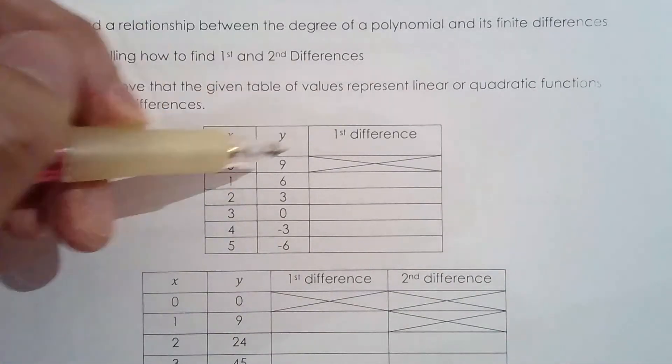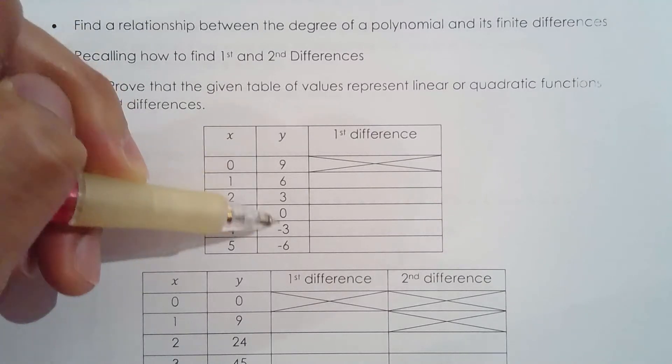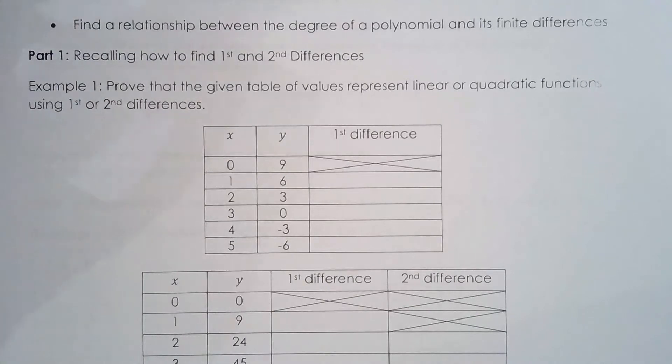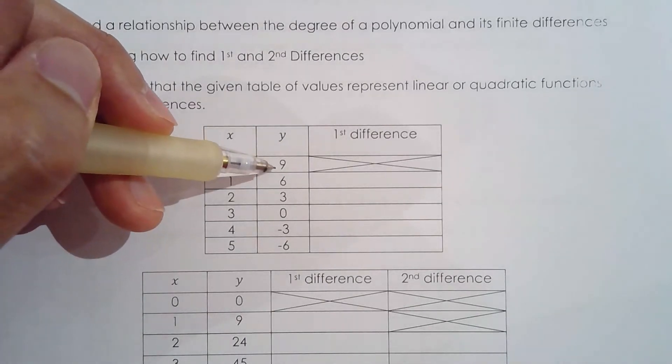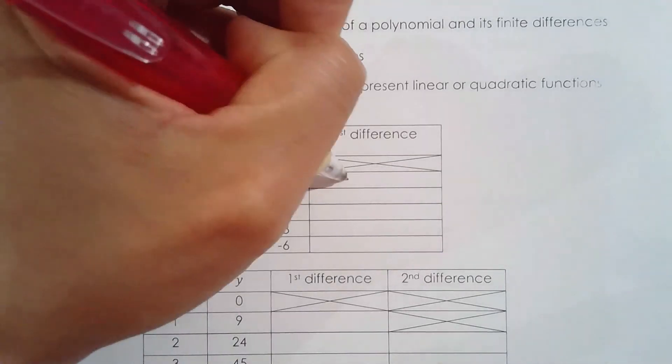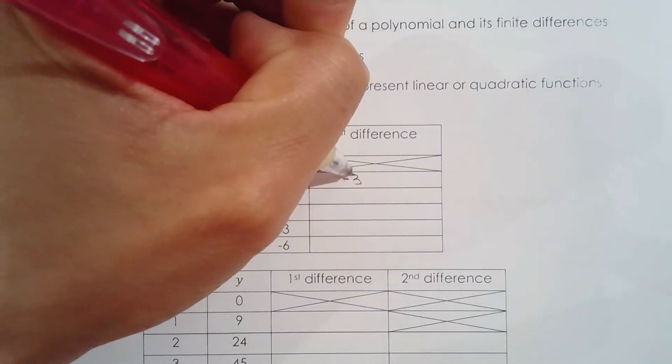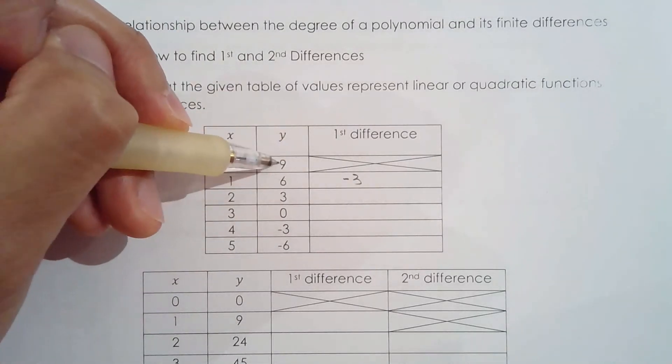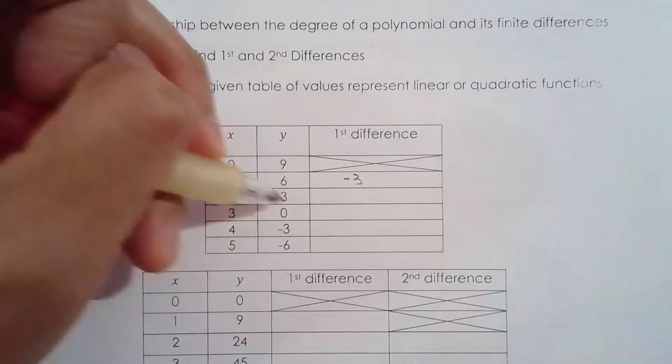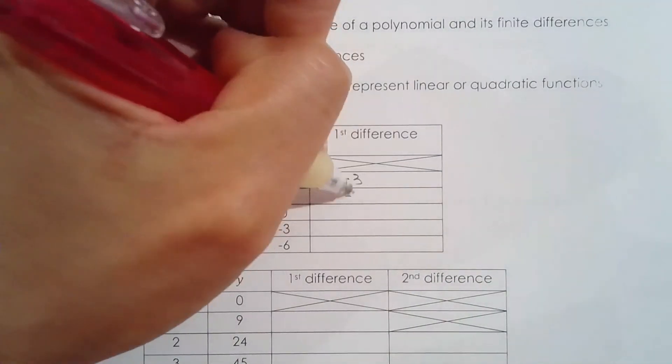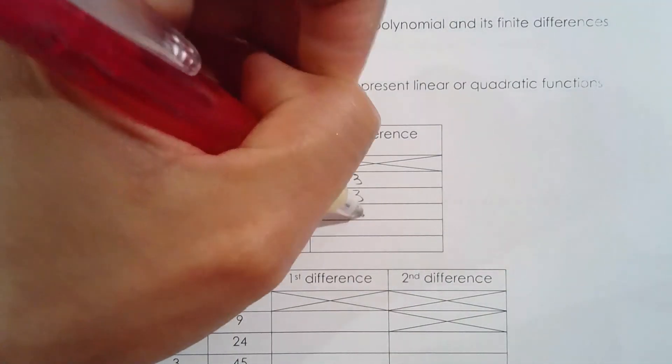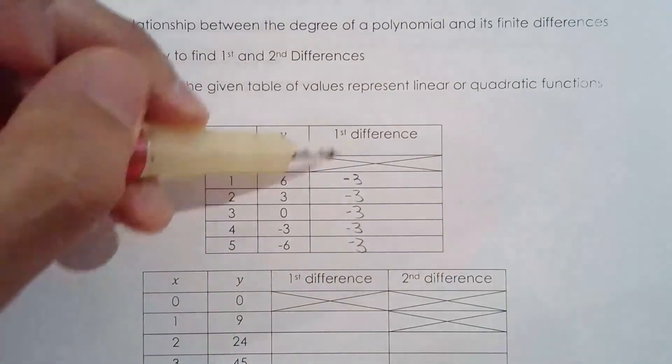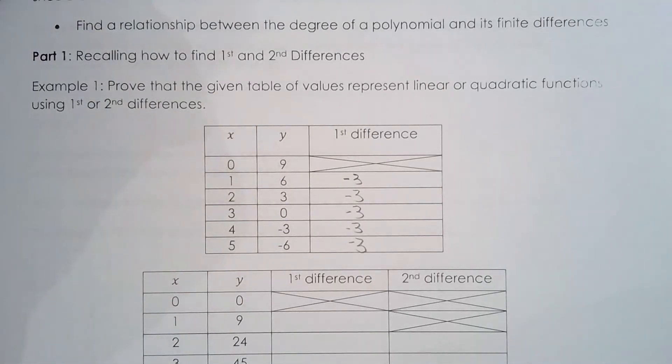To find the first differences, you look at how the y values are changing. Students always ask me, is it 9 minus 6 or 6 minus 9? My response is, how are the y values changing? To go from 9 to 6, you went down by 3. So if it's negative 3, then it's obvious that it has to be 6 minus 9. Let's do 3 minus 6, 0 minus 3, negative 3 minus 0. What do you know? The first differences are constant, so this table demonstrates a linear relationship.